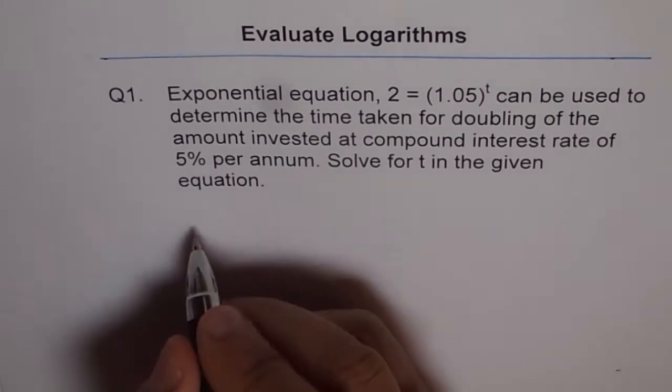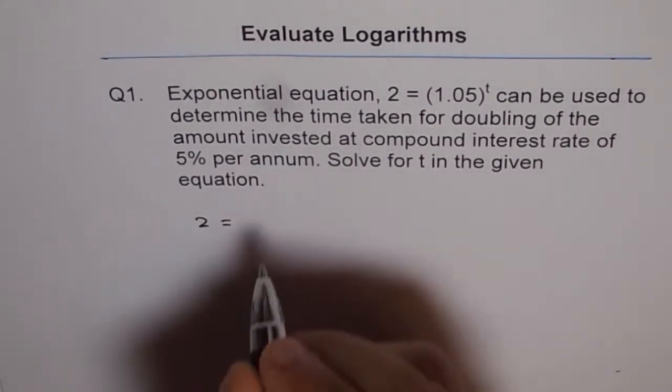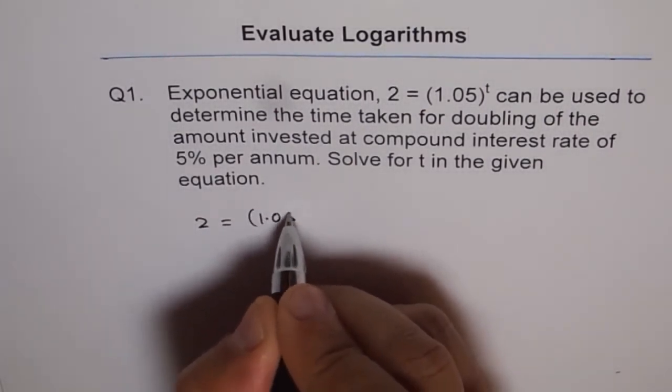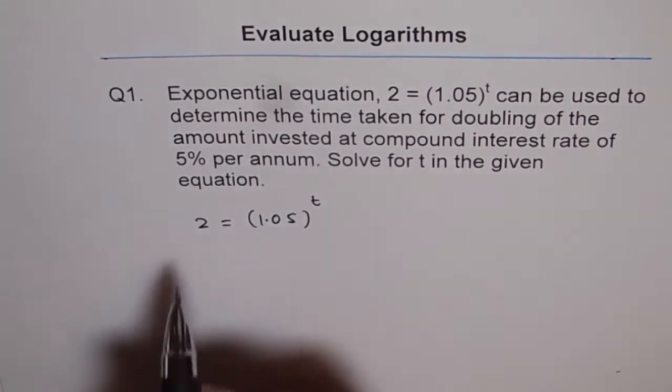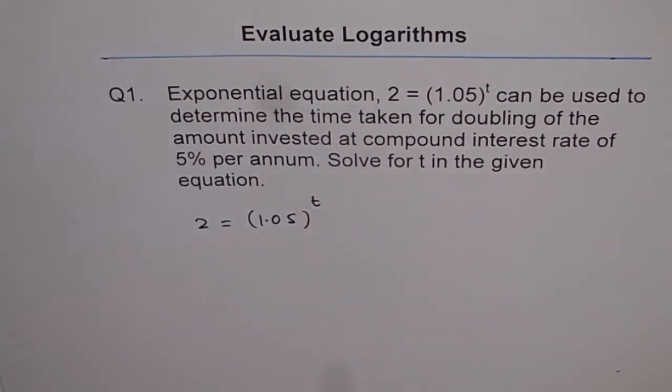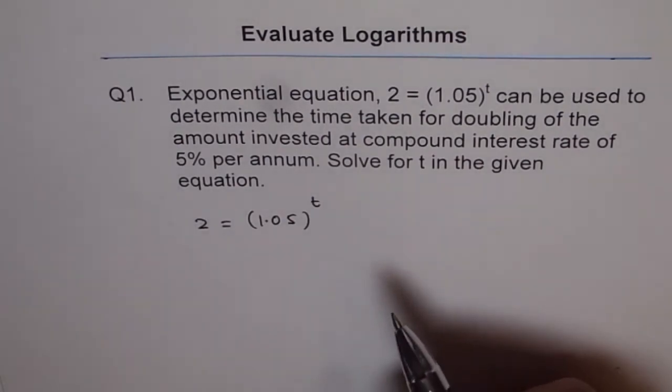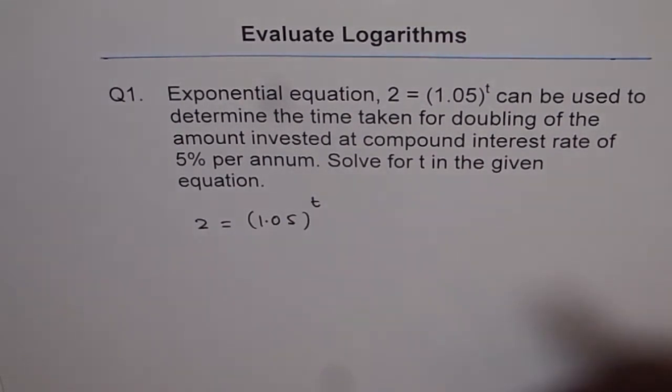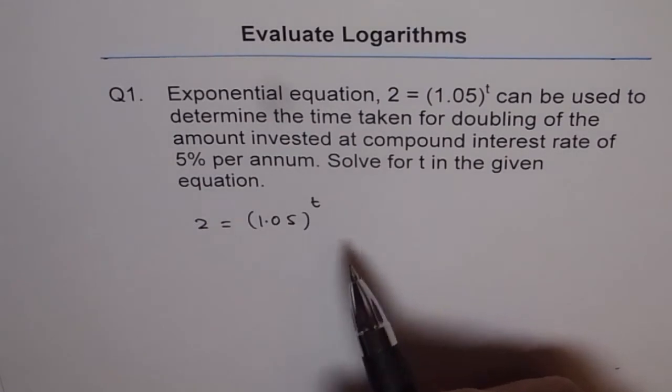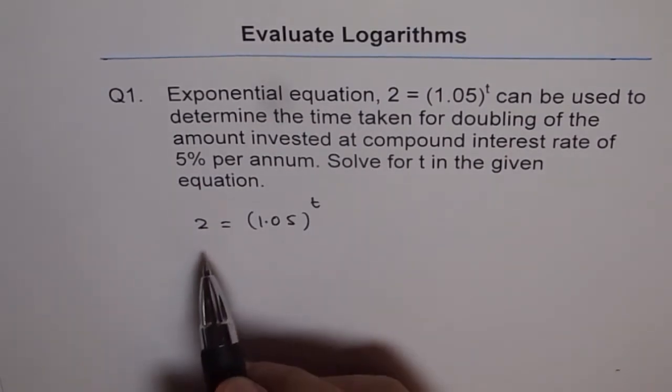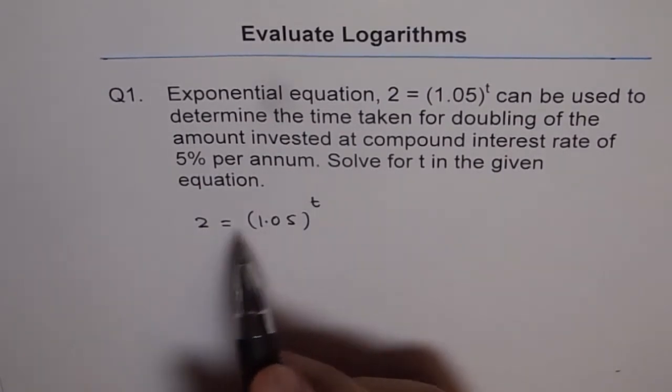We have here the equation 2 = (1.05)^t. That's an exponential equation. The only way to solve this is to find log on both sides, and that is why we have log—it is the inverse of exponential function. So let's take log to the base 10 on both sides.